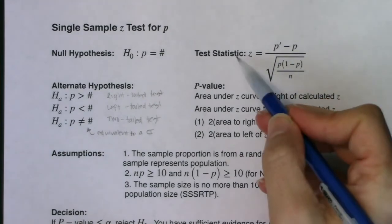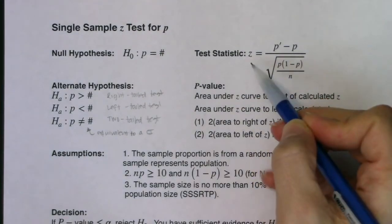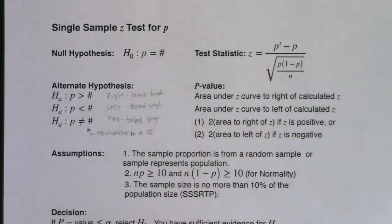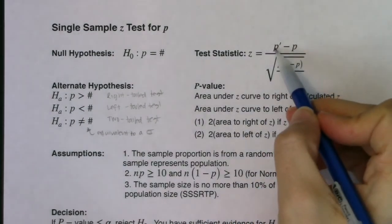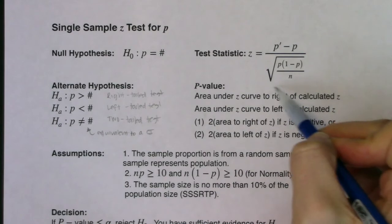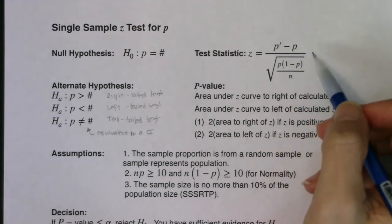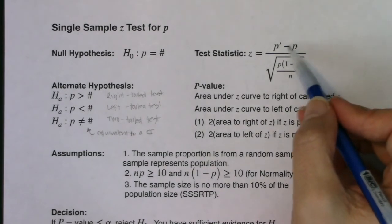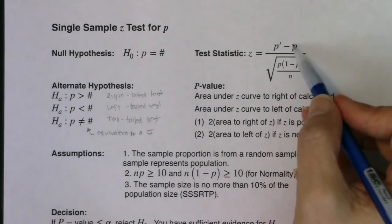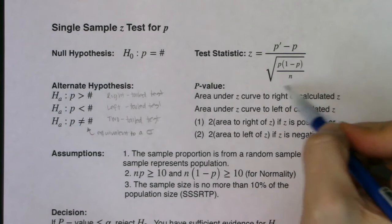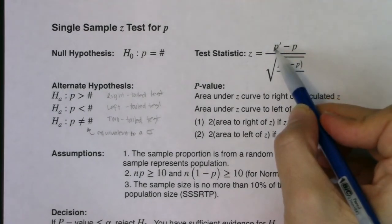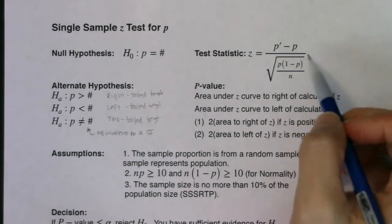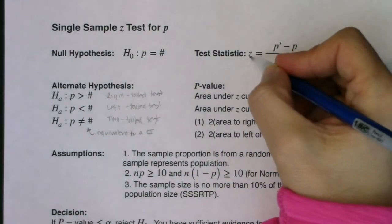Some of the new terms you're going to run into are test statistic and p-value. In proportion land, we're back with the z's — we're going to be making a z-score. The original z-score formula was value minus mean over standard deviation. When we're on the sampling distribution for proportions, your average was the population proportion and your standard deviation was the standard error formula. So this is your sample proportion minus your population proportion over the standard error — and this is ultimately going to be a z-score.